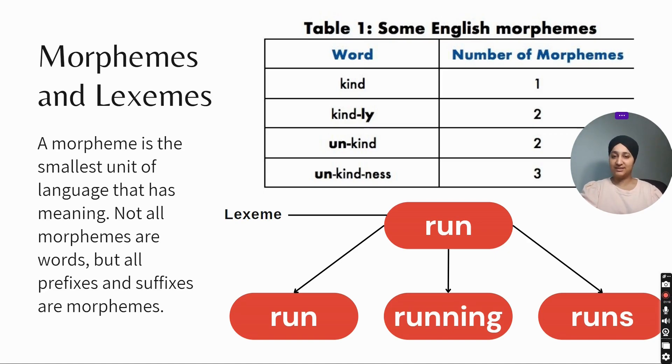As the name suggests, we can break the word into three parts. If you can see in the figure, using the word run we can create run, running, and runs. But here run is the lexeme - this is a root word.